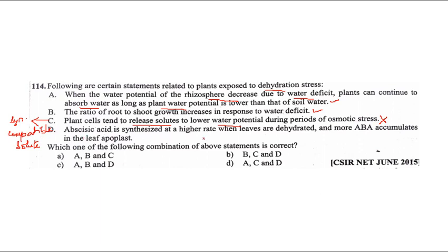Abscisic acid is synthesized at a higher rate when leaves are dehydrated, and more ABA accumulates in the leaf apoplasia as a stress hormone. So A and B are correct answers; C is wrong.